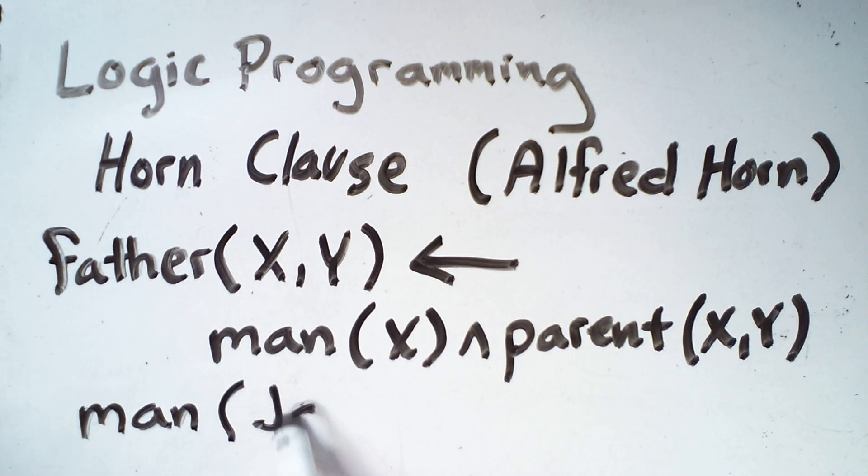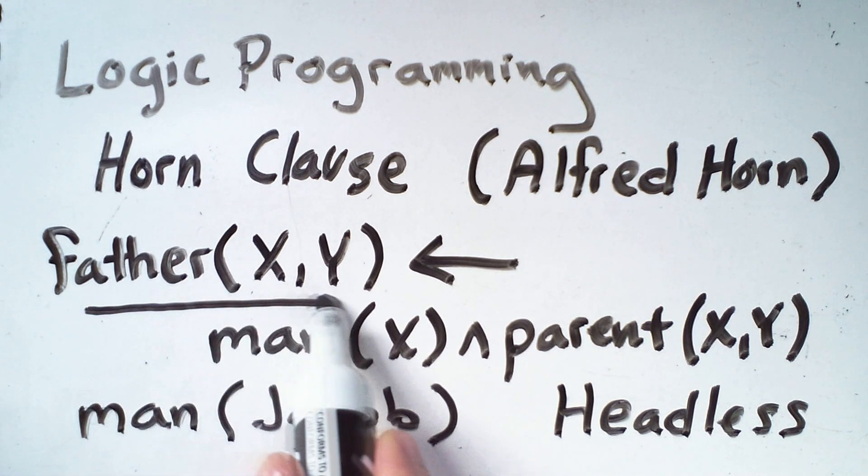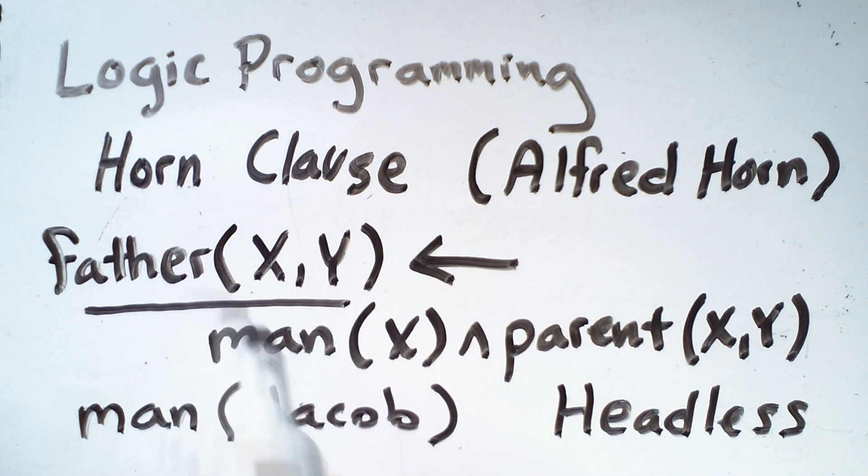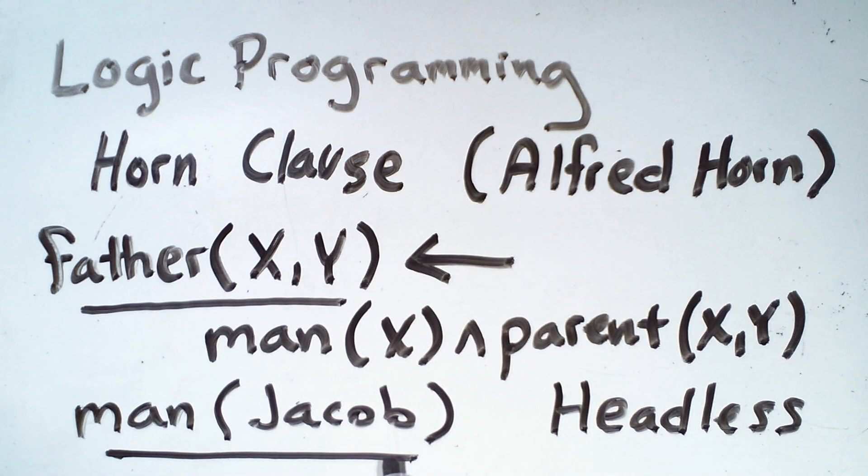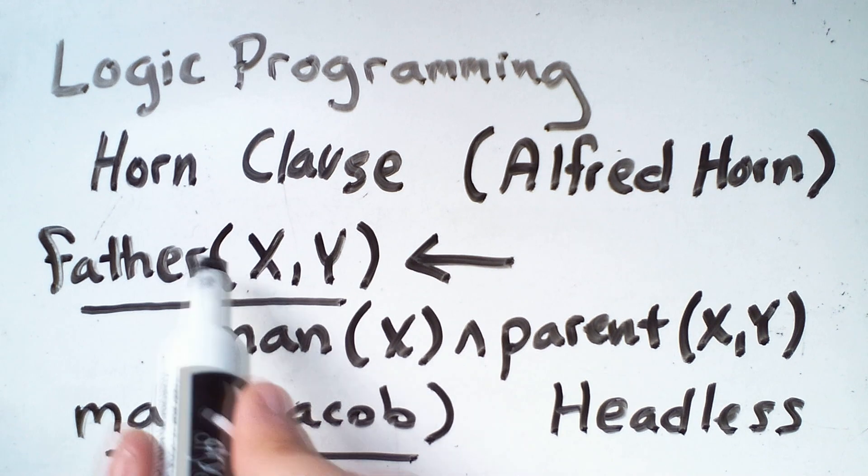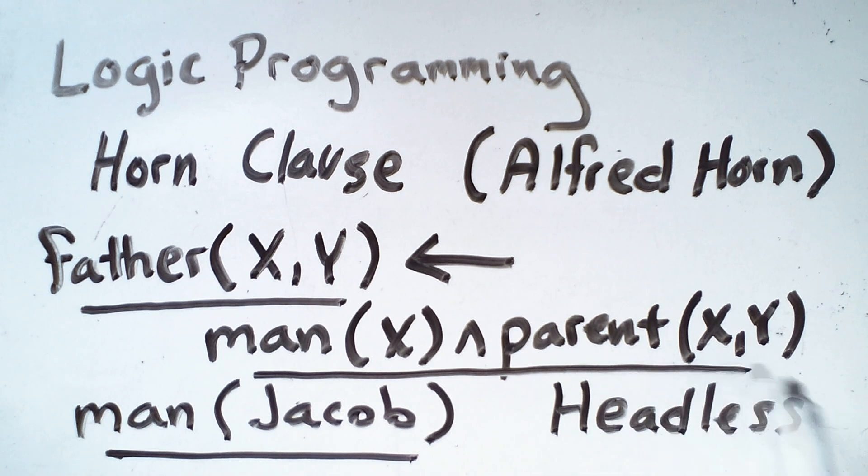So this is also a horn clause. It's a headless horn clause. The idea being that the left-hand side of the arrow is the head of a horn clause. But if you don't have an arrow at all, then this fact is more like the right-hand side of this other horn clause. So it's a horn clause without a head. So this is the head. When you have a horn clause that does have an implication, then this right side is the body.